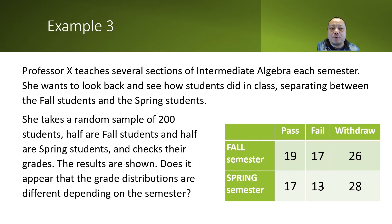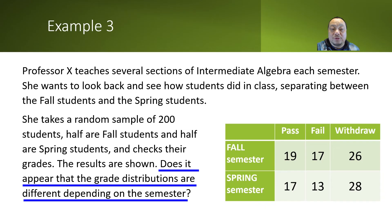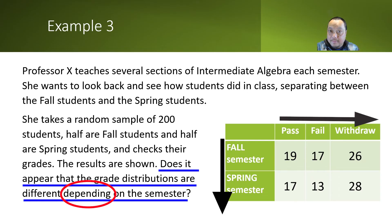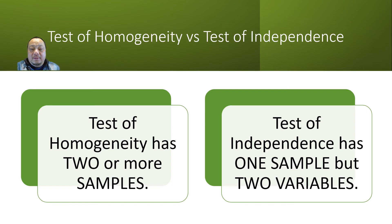Now let's look at the full question from the right — Example 3. The question prompt is: does it appear that the grade distributions are different depending on the semester? It's talking about two properties: what grade a person gets versus what semester the person was in. Two variables on the same person. The first variable is the grade; the second variable is the semester. And it's asking, is one variable dependent on the other? You can sometimes use the question prompt to determine which test. However, I have seen too many questions with ambiguous question prompts, so I'd rather recommend that you look at the data collection process. Did the researcher collect from one sample or two samples? Two samples: test of homogeneity. One sample: test of independence. My way of remembering it is the letter I in independence looks like the number 1.